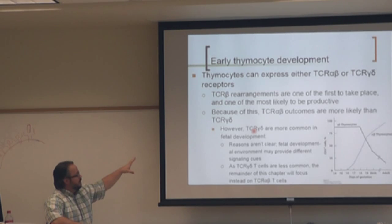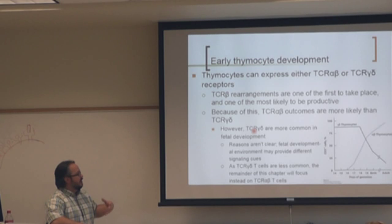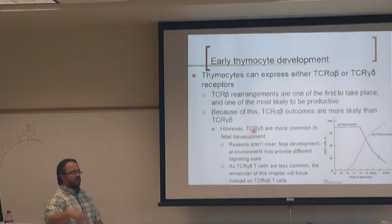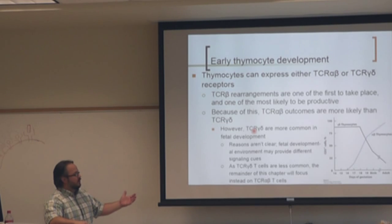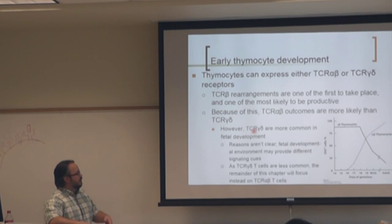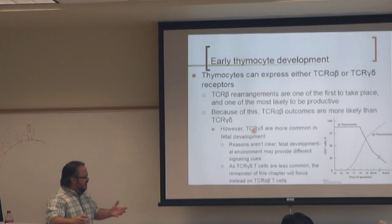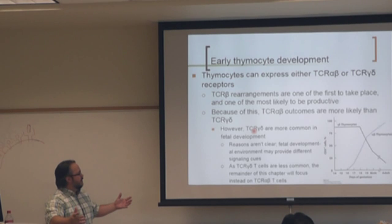In general, because you only need one successful recombination for beta versus needing both gamma and delta to be successfully recombined for gamma delta T cells, the odds favor more successful betas. So as adults, we have many more alpha beta T cells than gamma delta, which is good because alpha beta T cells are where we get a lot of our diversity. Gamma deltas are more invariant and behave more like the innate immune system, recognizing certain pathogen-associated factors.